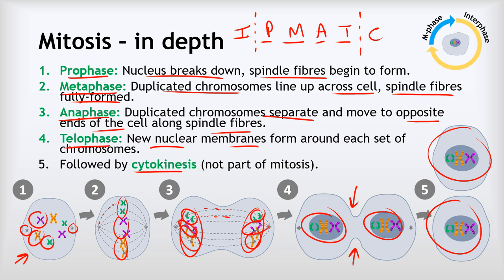To remember all of that, just use the acronym IPMATC: I for interphase before mitosis, then prophase, metaphase, anaphase, telophase, and C for cytokinesis after mitosis.